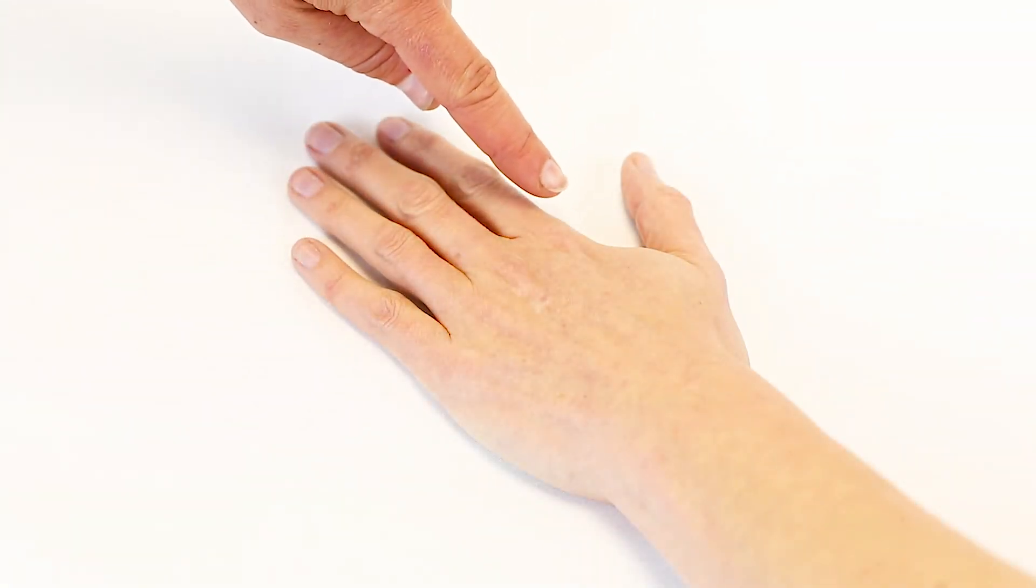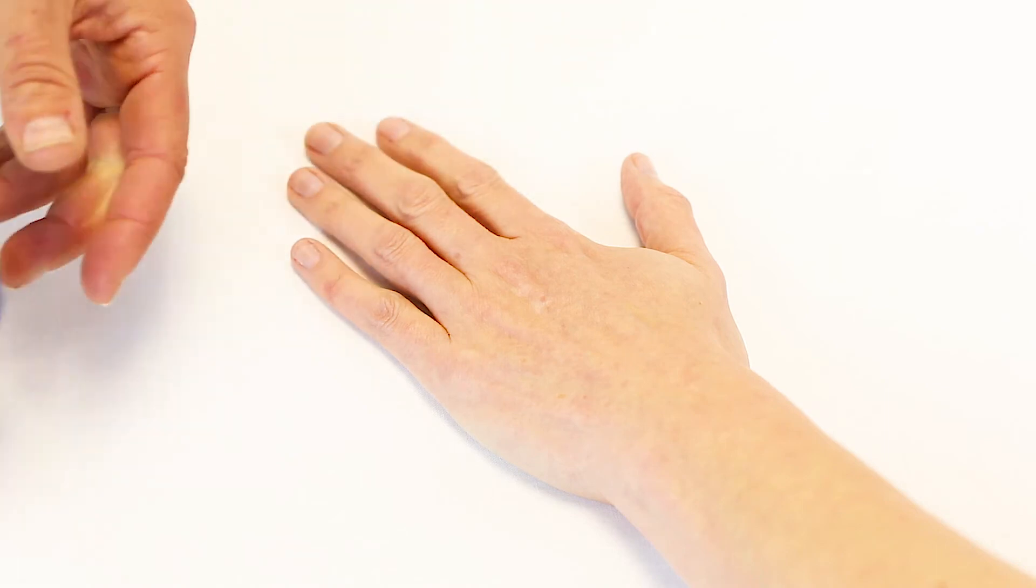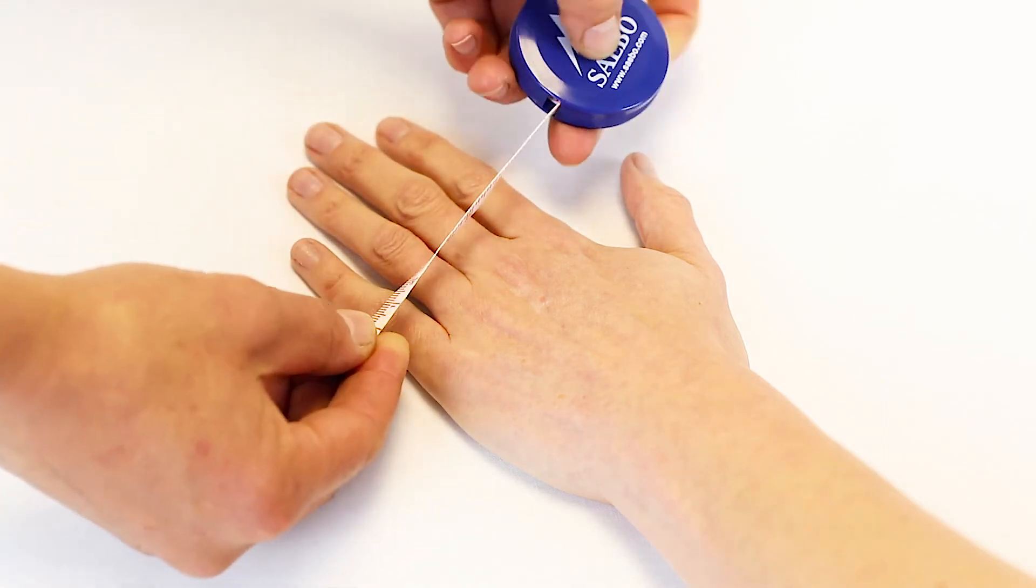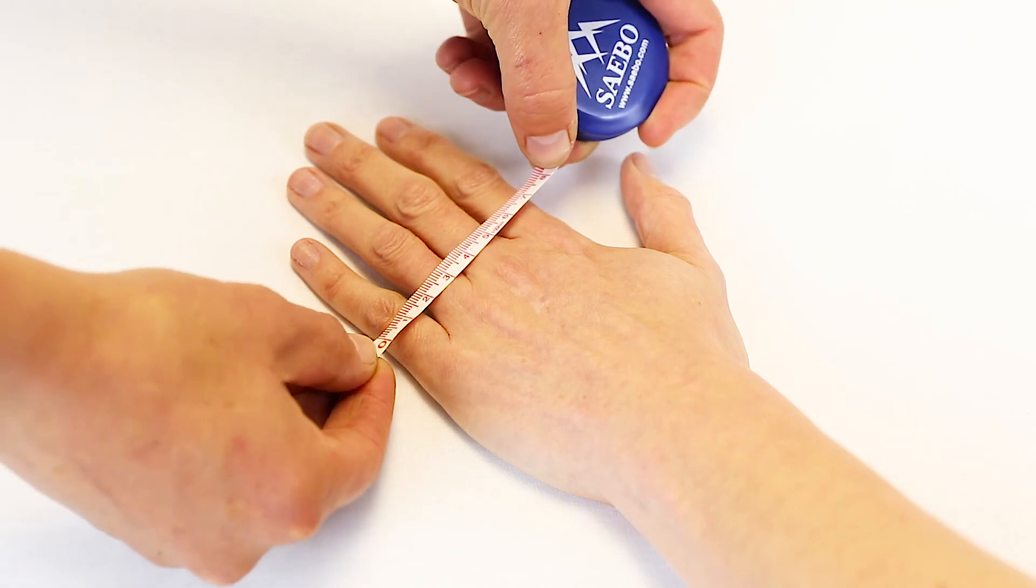Take a horizontal measurement across the hand just past the knuckle joints indicated by where my thumb is. The tape measure should not wrap around either side of the hand.